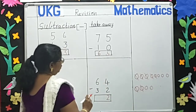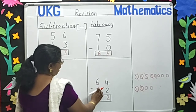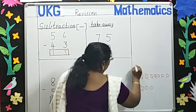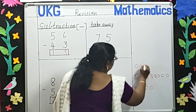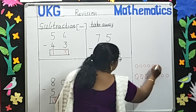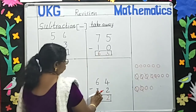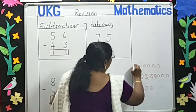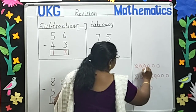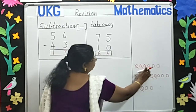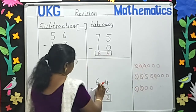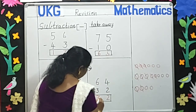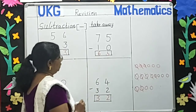Very good. Now next, 6 and 3. Again we will make 6 circles: 1, 2, 3, 4, 5, 6 circles. We will minus 3. 1, 2, 3. So 1, 2, 3 are left. 6 minus 3 is 3. Answer is 32.